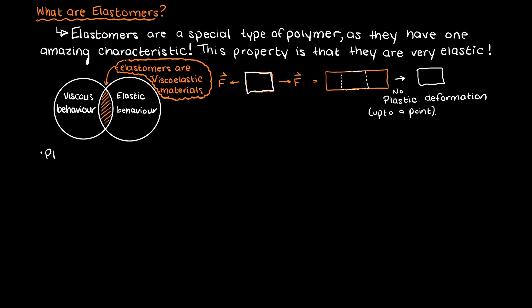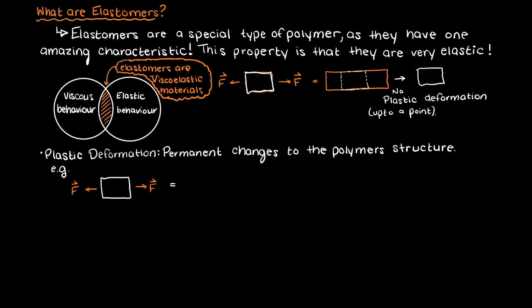Plastic deformation is permanent changes to the polymer structure, meaning the polymer will not return to its original shape. Plastic deformation will occur after a certain amount of force is applied to it, called the material's yield point, but this will differ based on the type of elastomer you are dealing with.